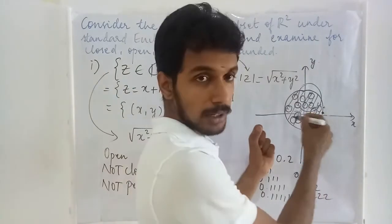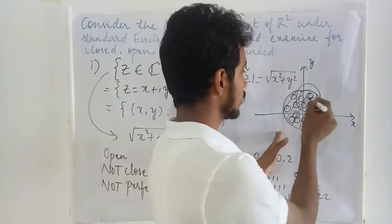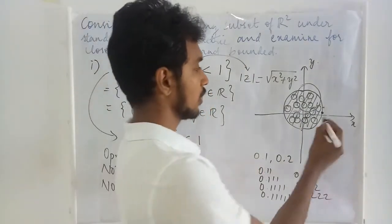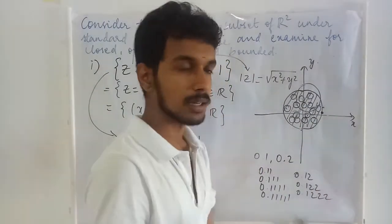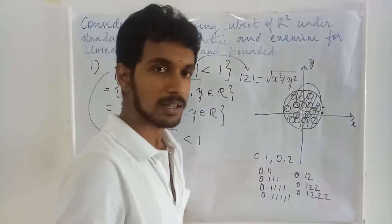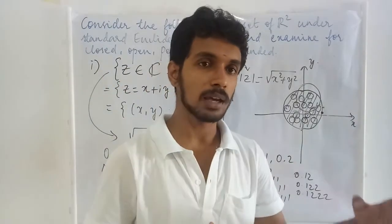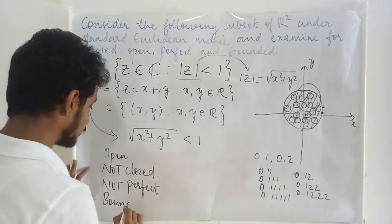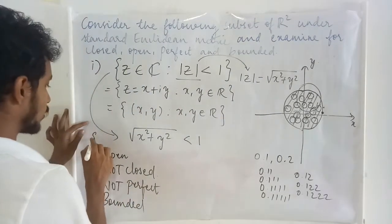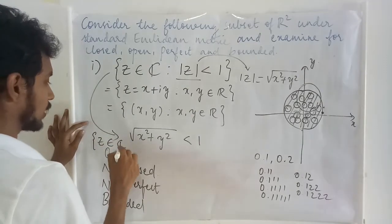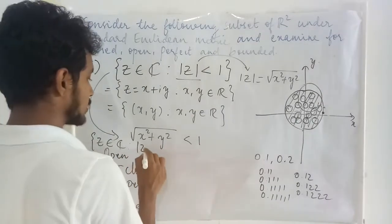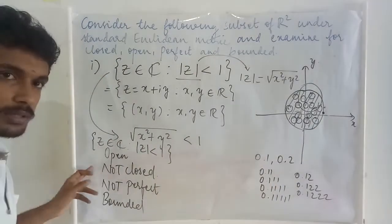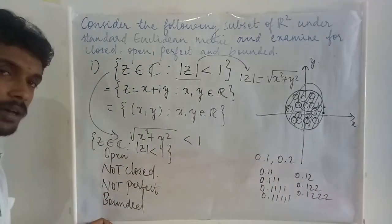Whatever may be the point you take on this circle, it will satisfy the condition x² + y² < 1. Even if you include the boundary points, those also satisfy a modified condition — it will be either smaller than or equal to 1. Therefore, this set is a bounded one. So the set of complex numbers satisfying |z| < 1 is open, not closed, not perfect, and is bounded.